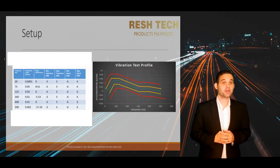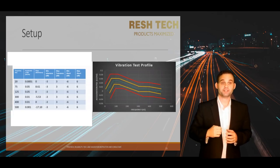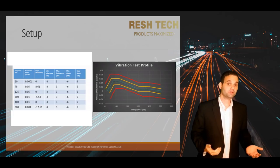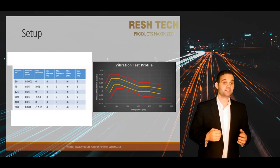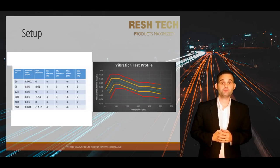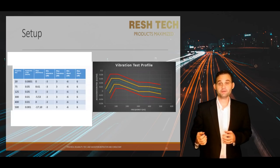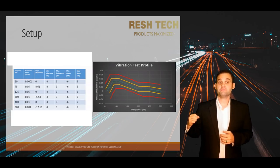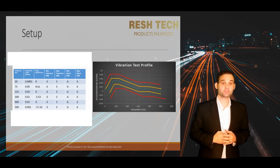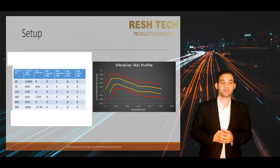Let's cover the test profile menu. The test profile menu has a breakpoint table, and notice there are a few additional columns: slope, minimum tolerance or limit, maximum tolerance or limit, minimum abort, and maximum abort.